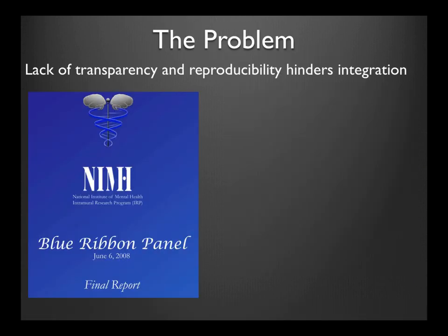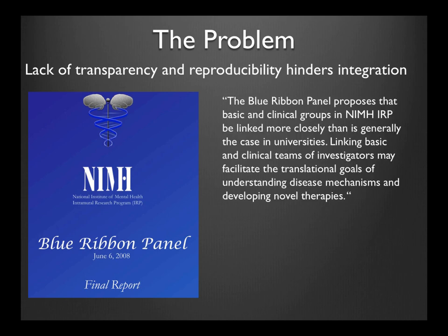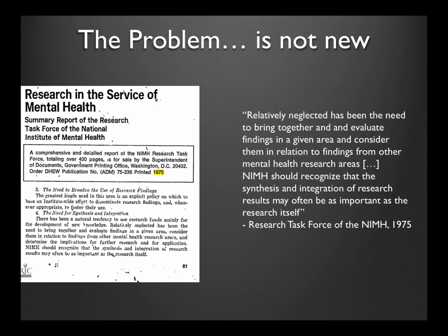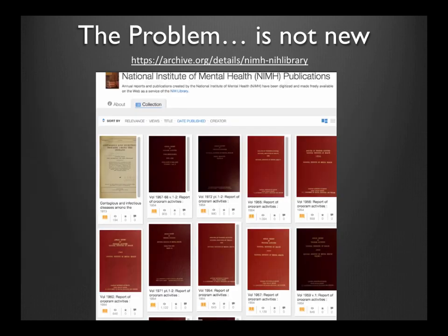These problems are not new. A blue ribbon panel published in 2008 talked about the lack of transparency and reproducibility and how it hinders integration. There's also one from 1975 talking about the lack of integration, how things are siloed, and how we're not sharing data. All of these things can be addressed by data sharing. The NIH library has a wonderful archive of these blue ribbon panels — I'll make these slides available so you don't need to scribble down the URLs.